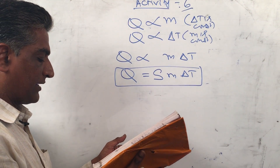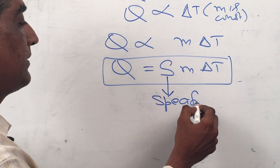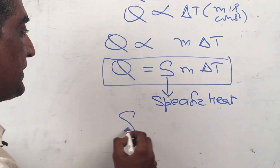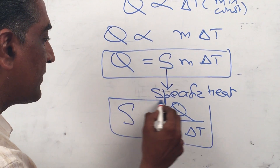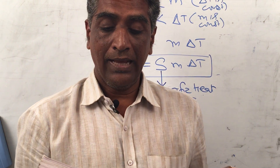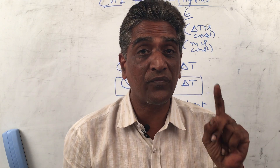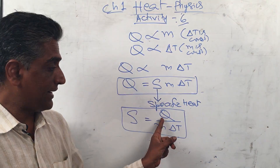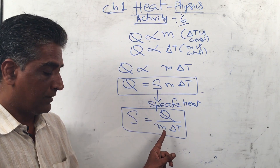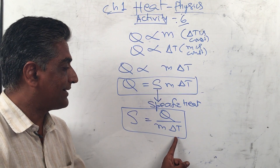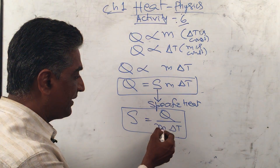Here s is a constant for a given substance. This constant is called specific heat. So s = Q / (m delta T). The specific heat of a substance is the amount of heat required to raise the temperature of one unit mass of the substance by 1 degree centigrade.